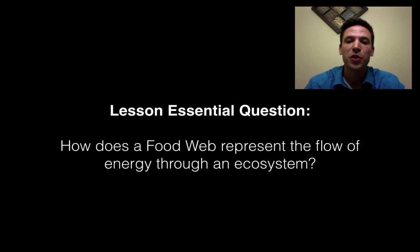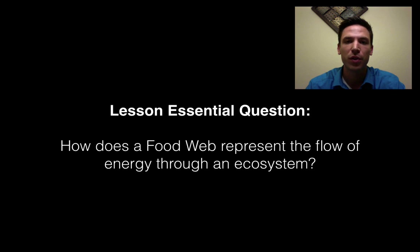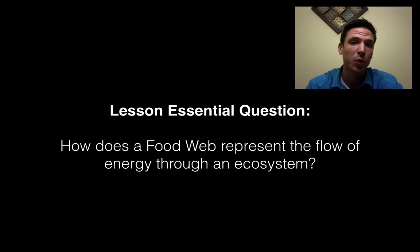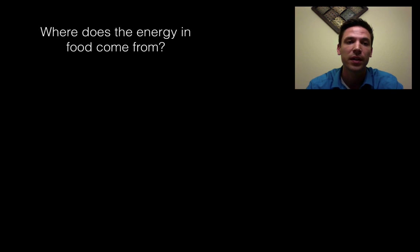Our essential question here is: how does a food web represent the flow of energy through an ecosystem? By the end of this, you should be able to look at a diagram of a food web, really understand what's happening to energy as it moves from organism to organism, and how removing just one of these organisms or species might affect everyone else, because we are all connected.